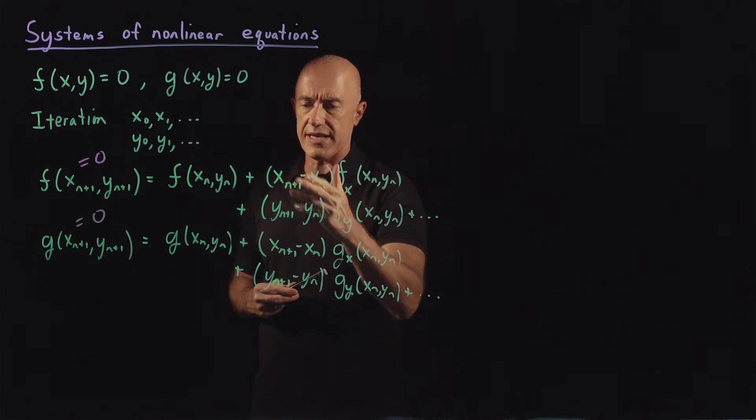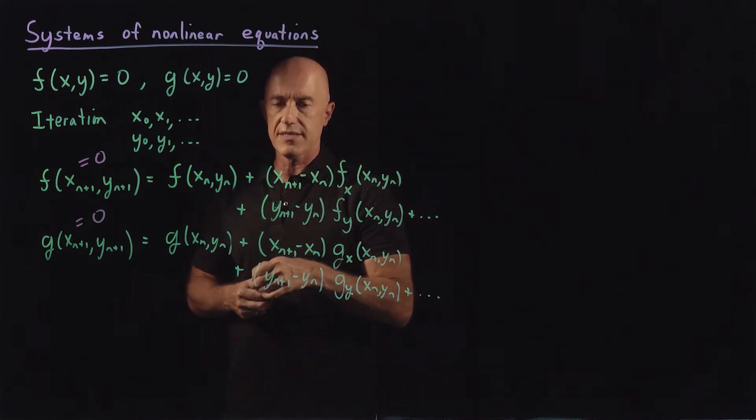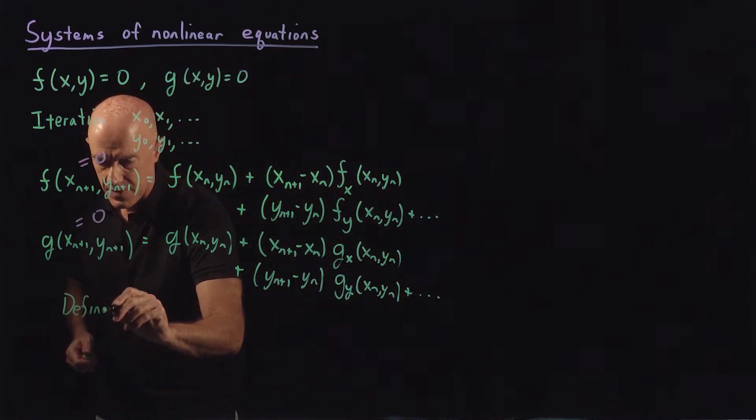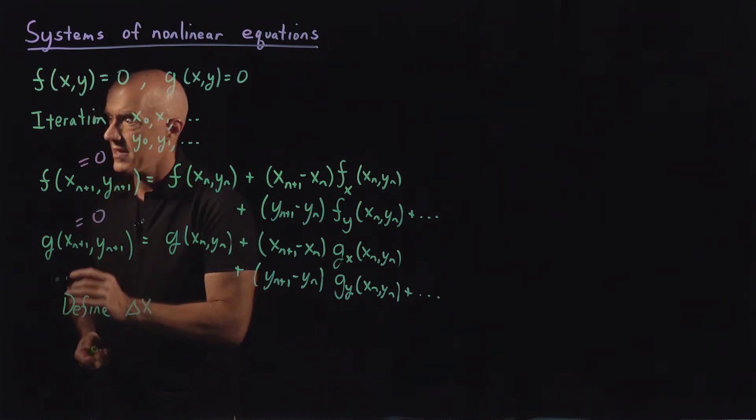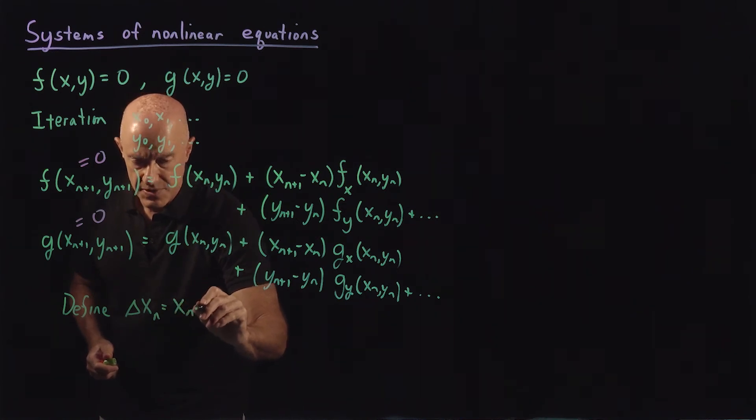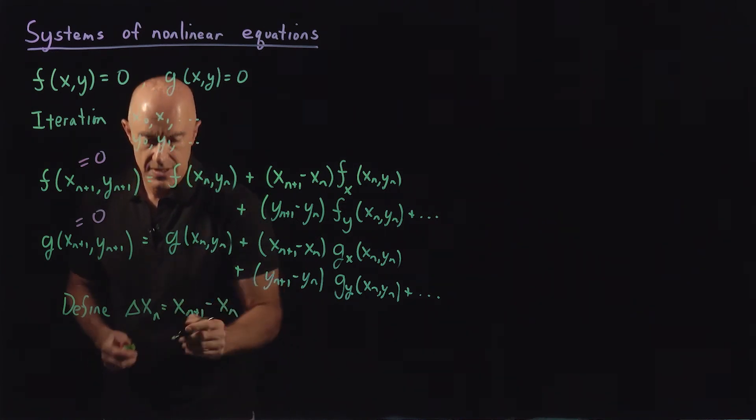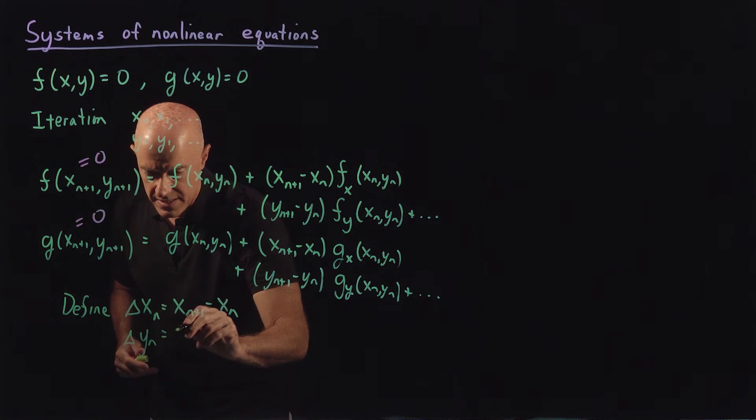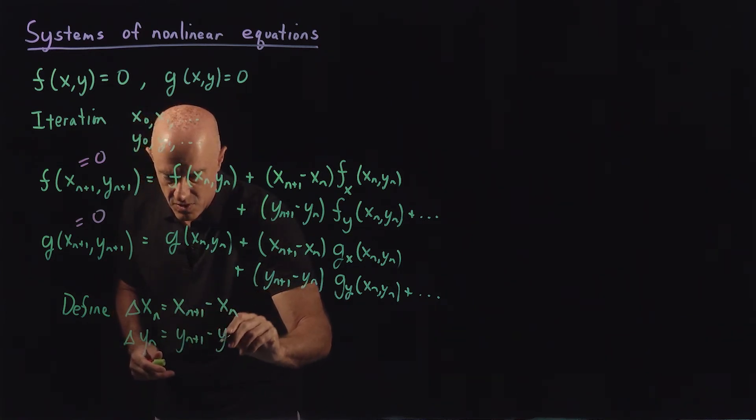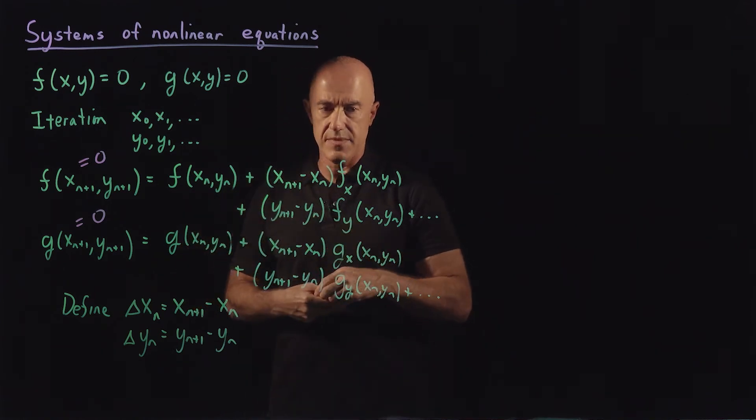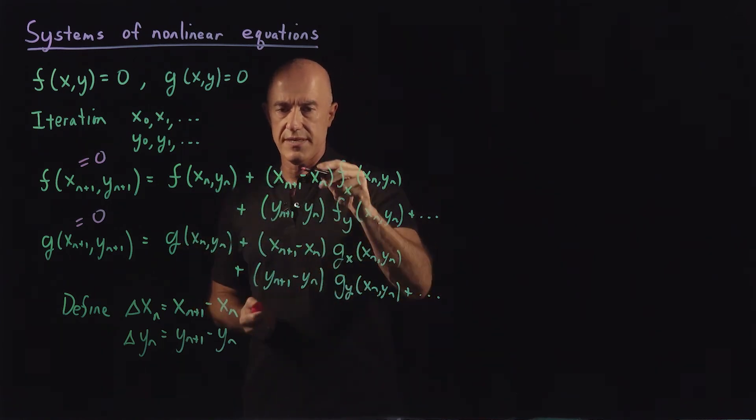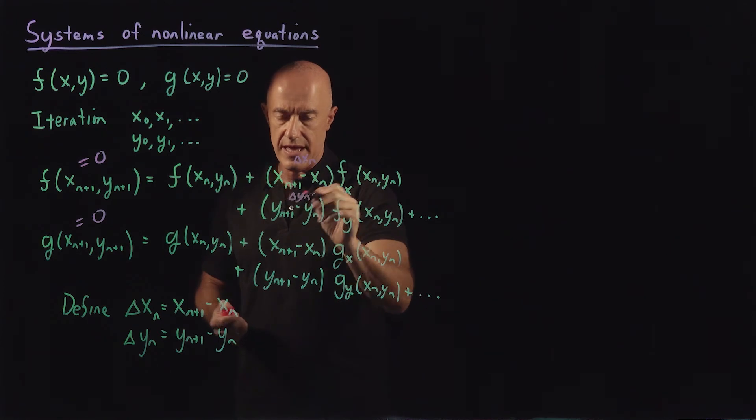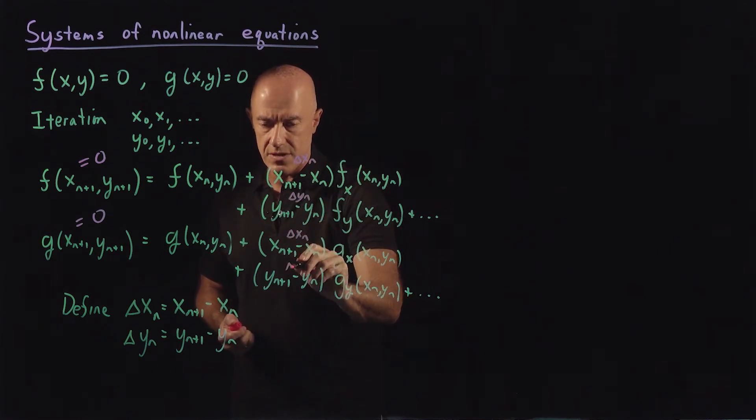Instead of solving for x n plus 1 and y n plus 1, let's solve for this difference. So we're going to define delta x n equals x n plus 1 minus x n. So that's the change in x. And we're going to find delta y n equals y n plus 1 minus y n. So these terms here become delta. This becomes delta x n. This one becomes delta y n and delta x n delta y n.